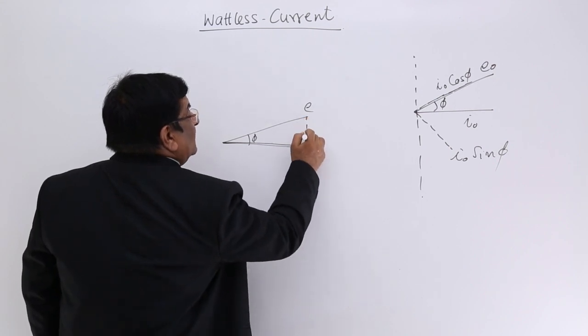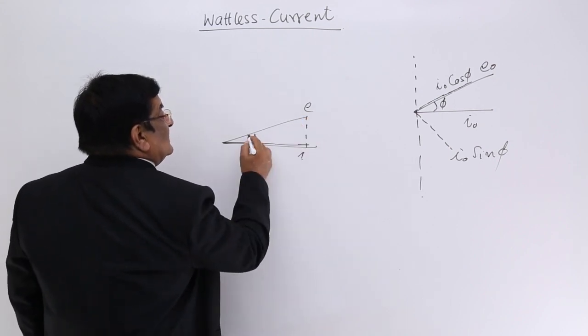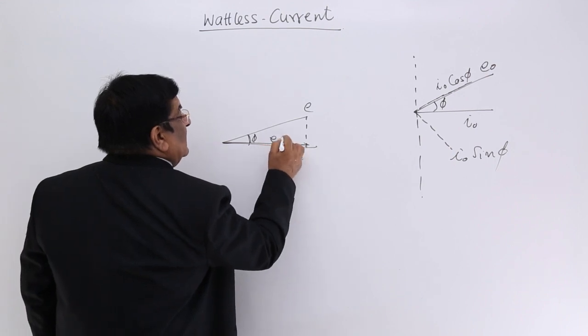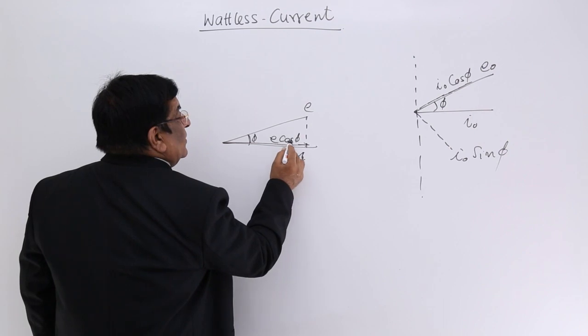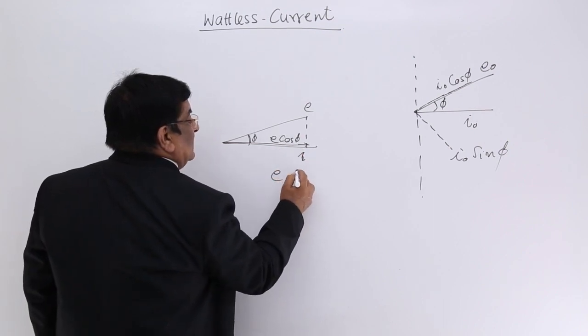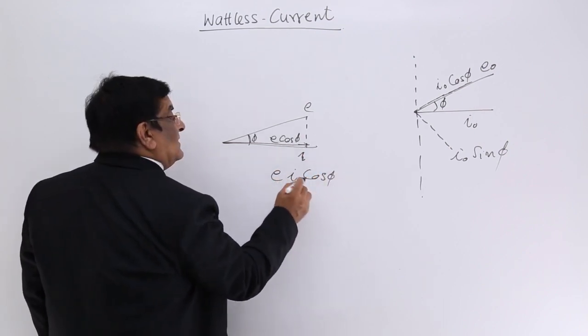We get E times I times cos φ, which gives the power.